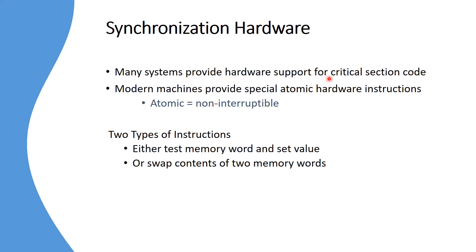Many systems provide hardware support for critical section code. Modern machines provide special atomic hardware instructions. We will see two hardware instructions: first, test-and-set, which tests the value of the lock variable and sets it; second, swap, which swaps the contents of two memory words. Both instructions are atomic, meaning when a process executes either instruction, it cannot be interrupted — they are non-interruptable.